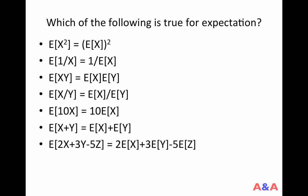Today we are going to study how to compute the expectation of a linear combination of multiple random variables. Before that, it's useful to know what holds for the expectation operator and what doesn't hold. I've put seven expressions, some of which are not true — which do you think are true in general, and which are not?